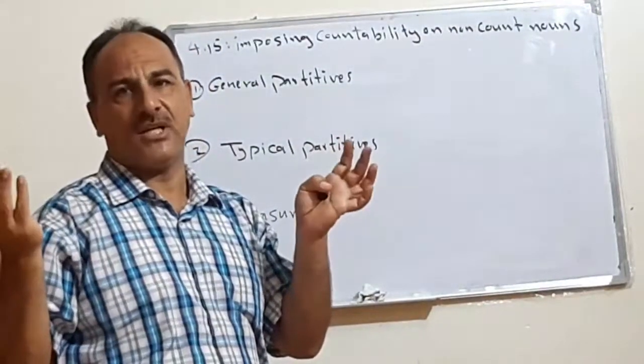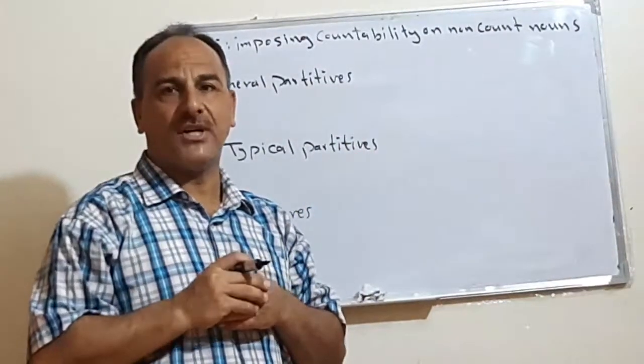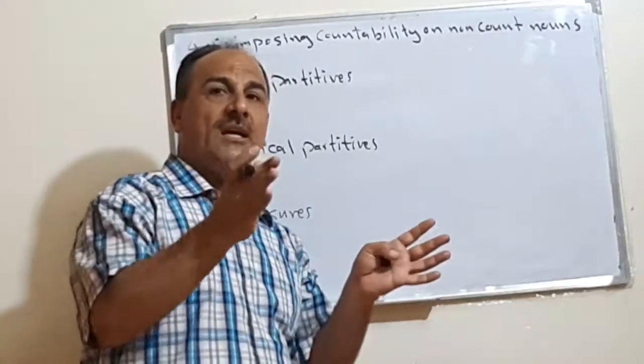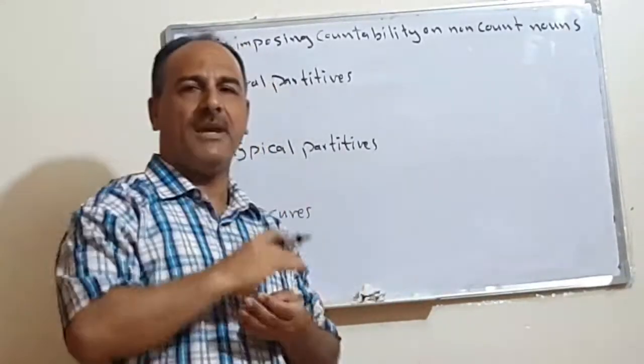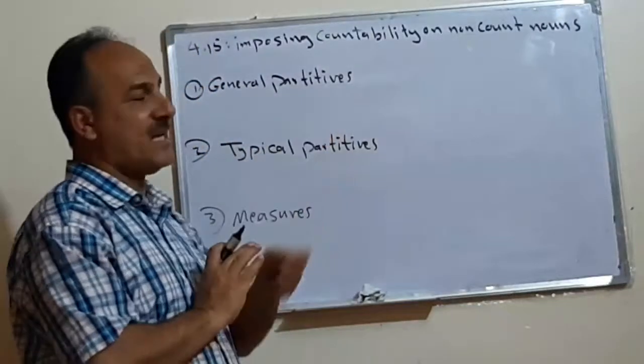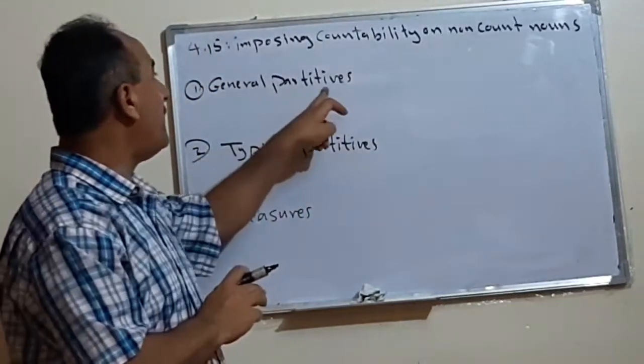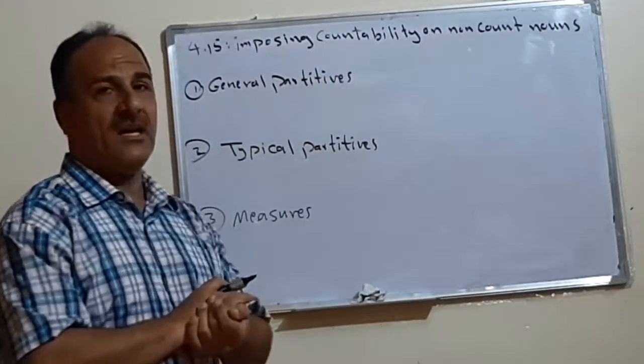So let's say, for example, if we have water, how do we manage with water? We try to see the water consists of what, then we try to make plural of these counts. Accordingly, we have three types of this procedure.